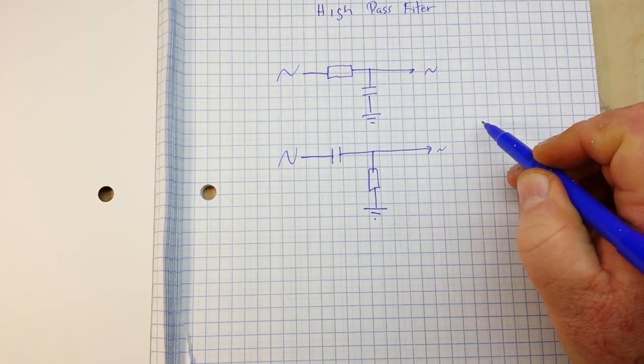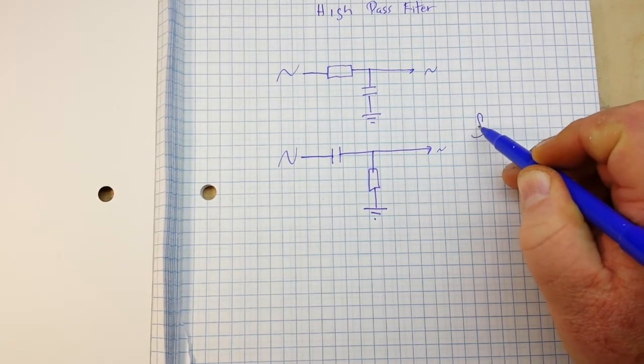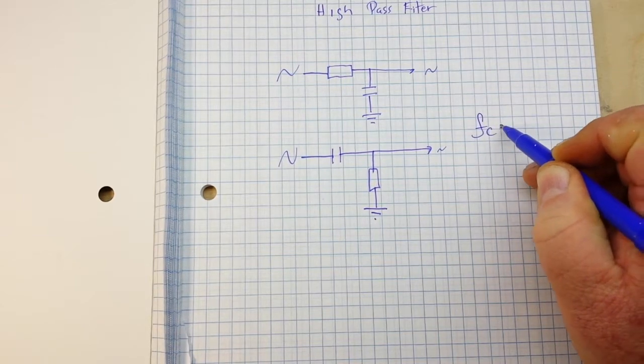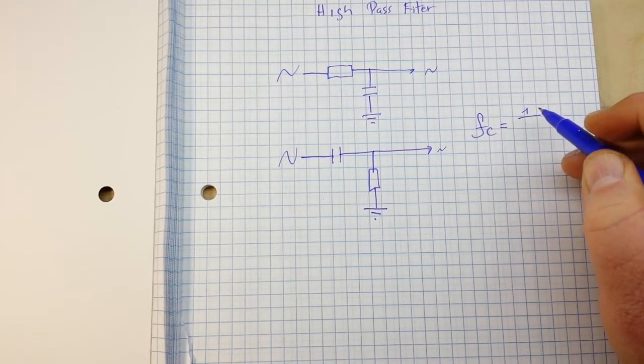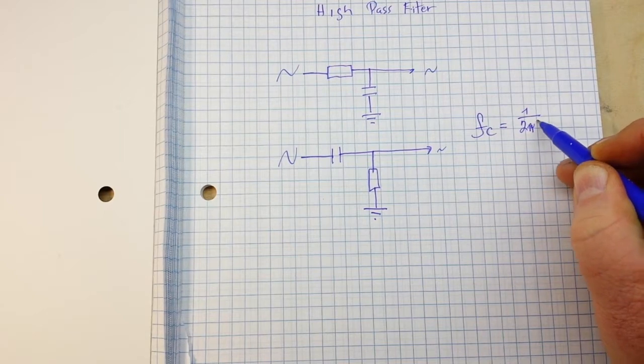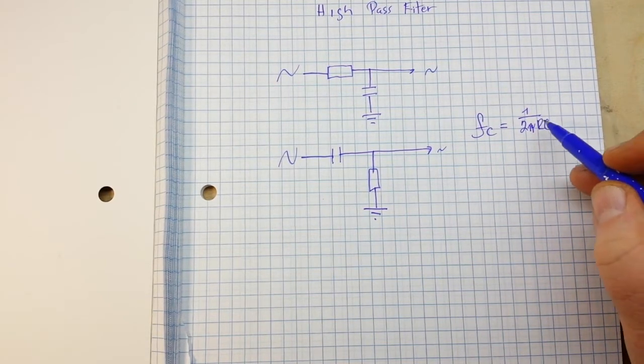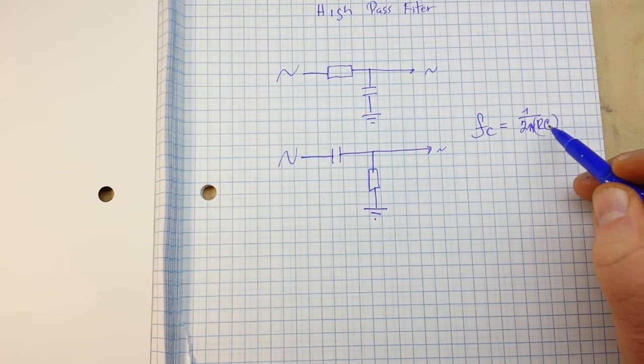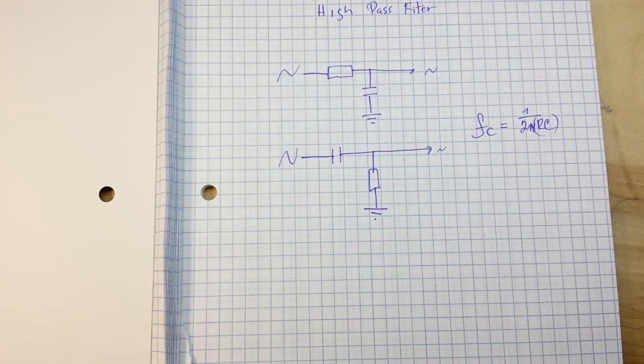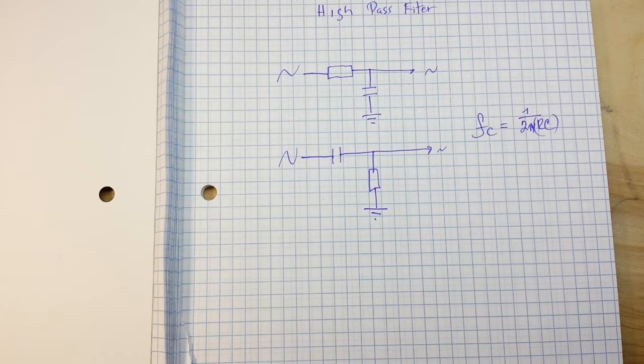And again, the formula is exactly the same. The cutoff frequency is the reciprocal of 2 pi RC. Once again, there's that RC time constant that we talked about before that is so important in electronics.